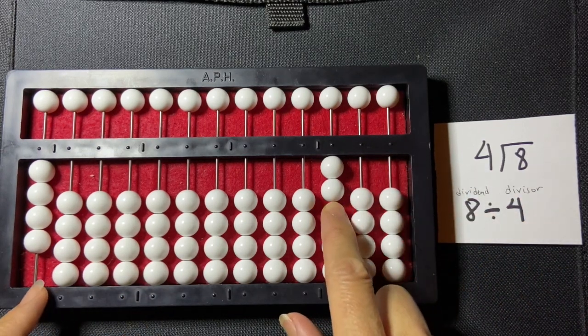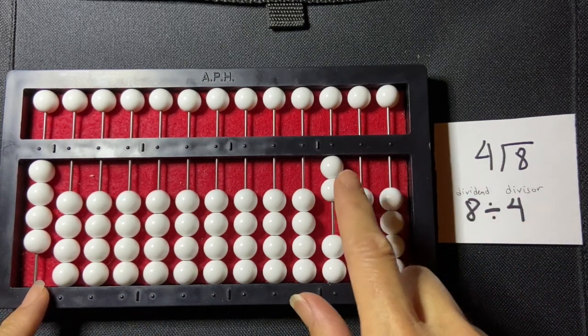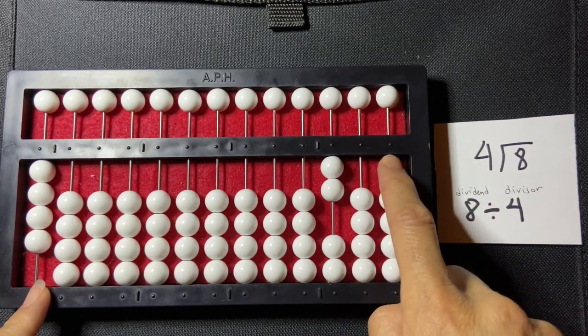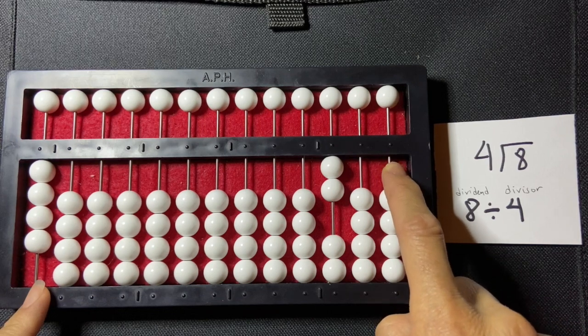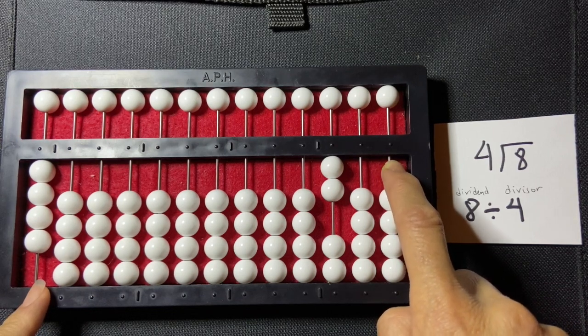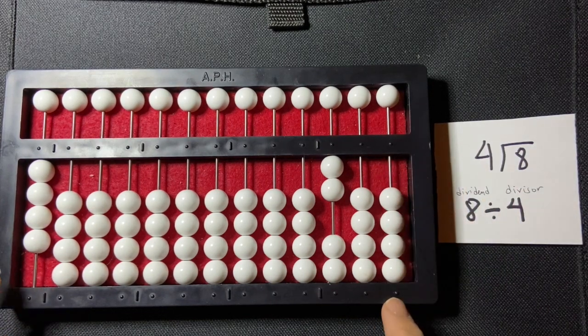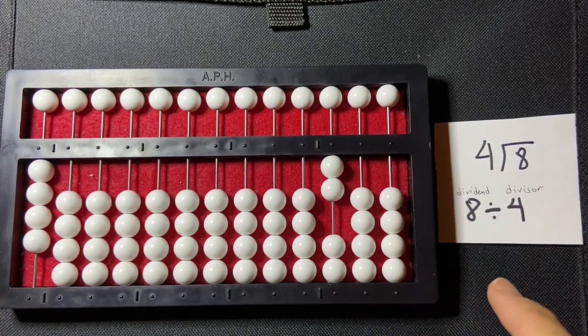So my quotient is two. Now if I had a remainder, it would have gone here in that first rod, in the unit rod. That's how you do a one-digit by one-digit division with no remainder on the abacus, using the counting method. Thank you.